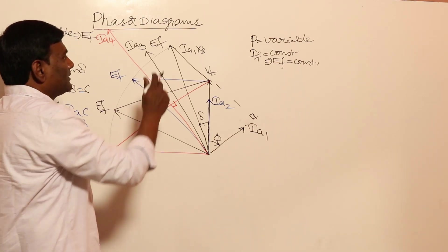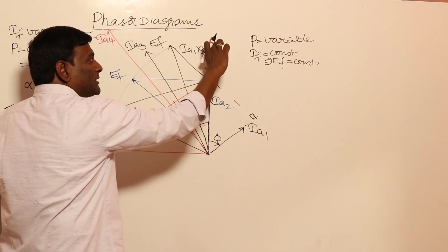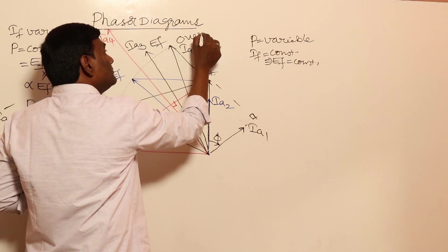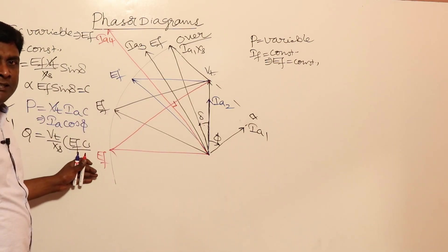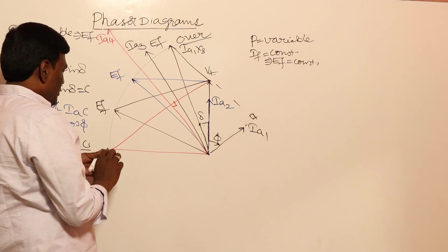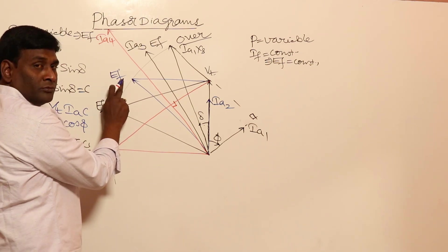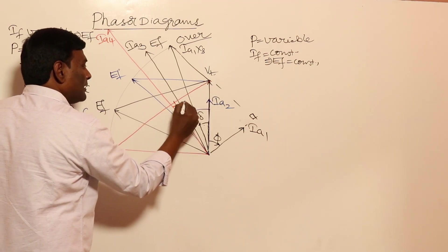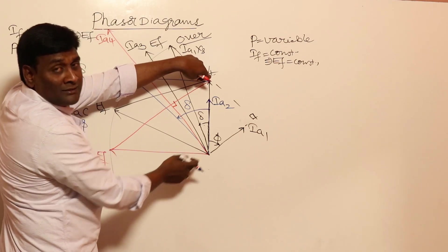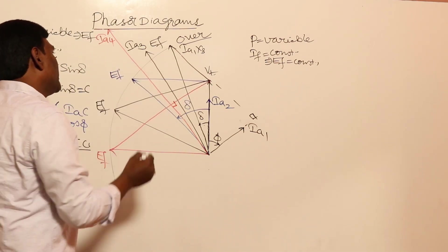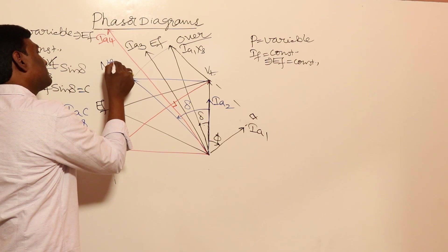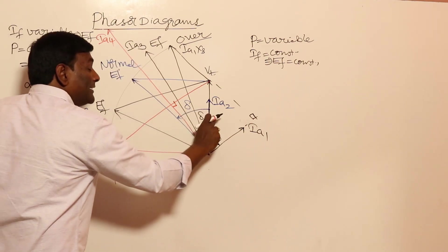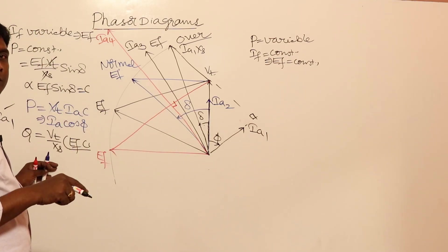For the black phasor, EF cos delta minus Vt is positive, so it supplies reactive power — over-excited. For the blue phasor, EF cos delta equals Vt — normal excitation, neither delivering nor absorbing reactive power. For the next case, EF cos delta is less than Vt, so it supplies negative reactive power — it absorbs reactive power, making it under-excited.